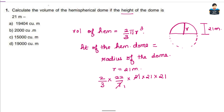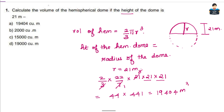Cancelling: 7 goes once and 7 goes three times; 3 cancels with 21 three times. So 2 × 22 = 44, then 44 × 21 × 21 = 19,404 cubic meters. So Option A is the answer.